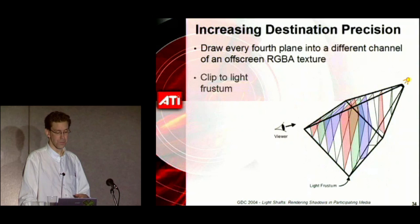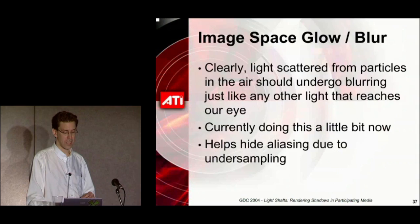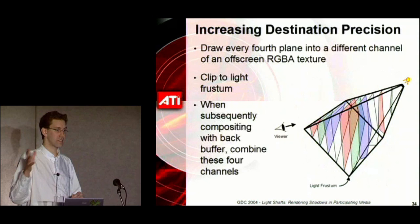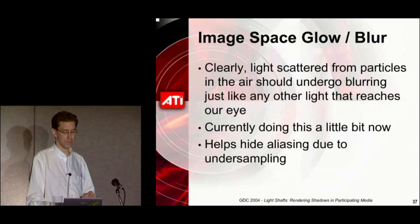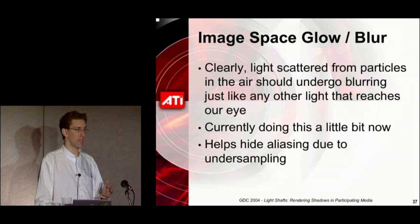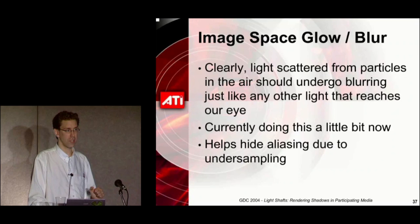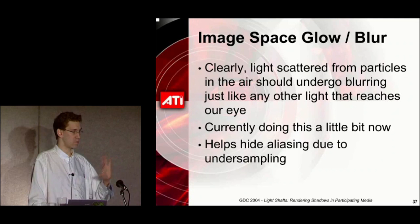Those are clipped to the frustum as well, and later when we composite that over the back buffer, we'll weave those scalar channels back together again. Lots of people are doing image-space glowing and blurring — this integrates with that very nicely, as you can see in Splinter Cell. It looks particularly nice together. More blurring also helps hide the aliasing you can get with this technique.